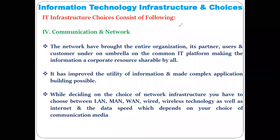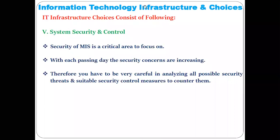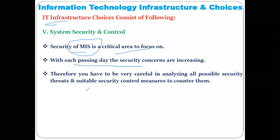The last infrastructure choice is system security and control, related to the previous topic discussed. Security of the information system can be provided through different antivirus software, different kinds of firewalls, and different cryptographic techniques. By considering all these factors, the IT infrastructure choices are made.